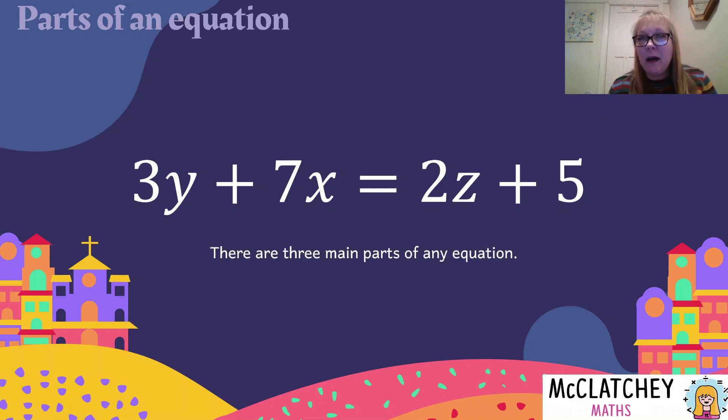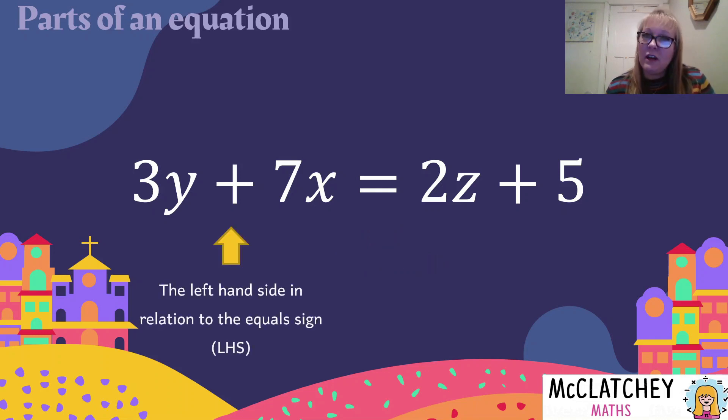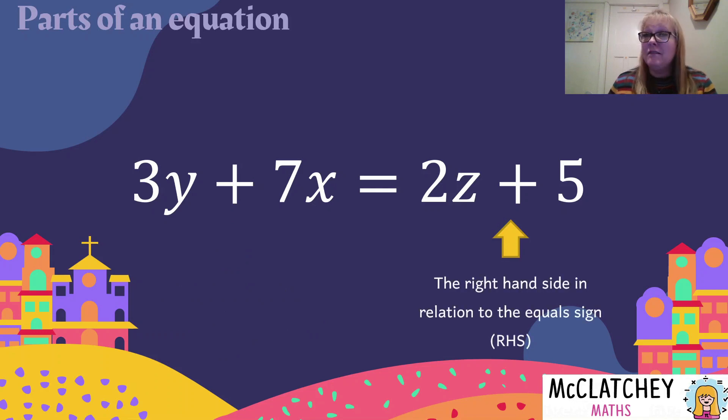And there are three key parts to any equation. This is not rocket science really, it's actually quite straightforward. Firstly, we've got our equal sign. This is what makes it different from an expression. Then we've got the left-hand side of the equation, and we'll refer to that as LHS for left-hand side. And then we've got right-hand side, which would be RHS. So you've got three parts of the equation, both sides of the equation, and your equal sign in the middle.